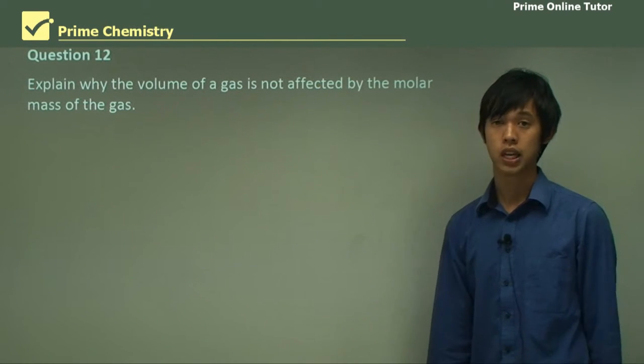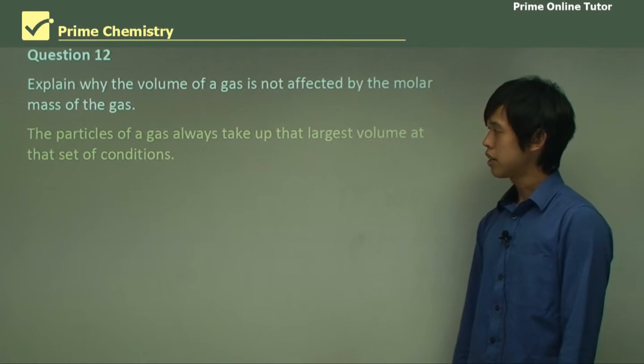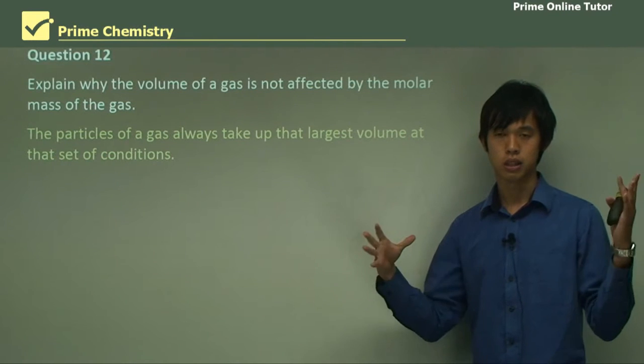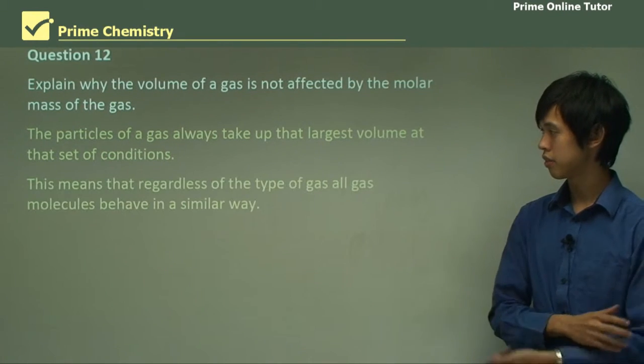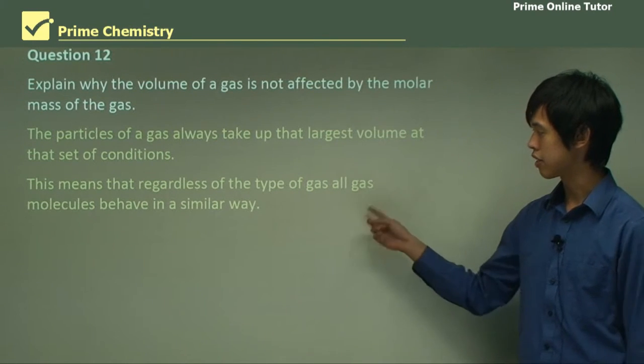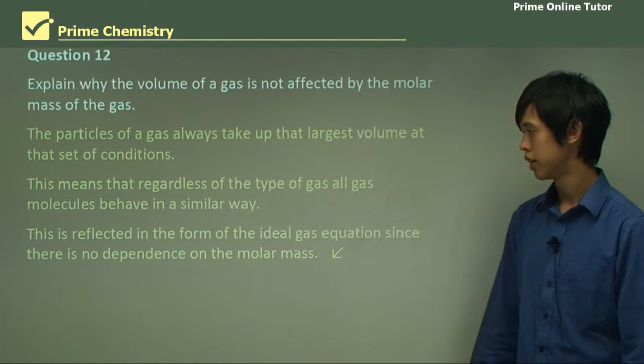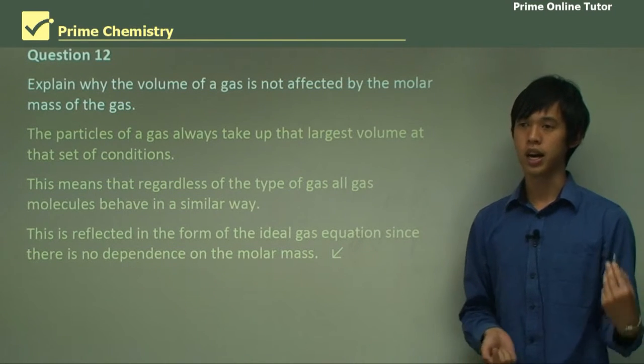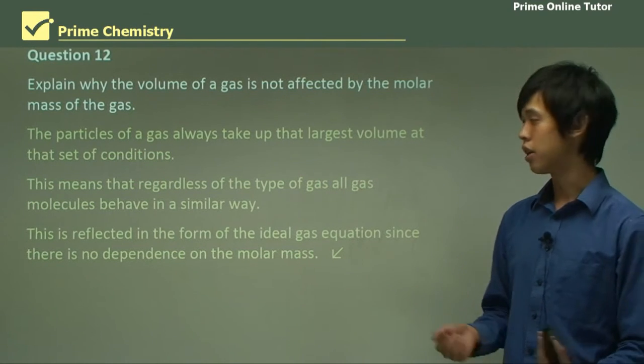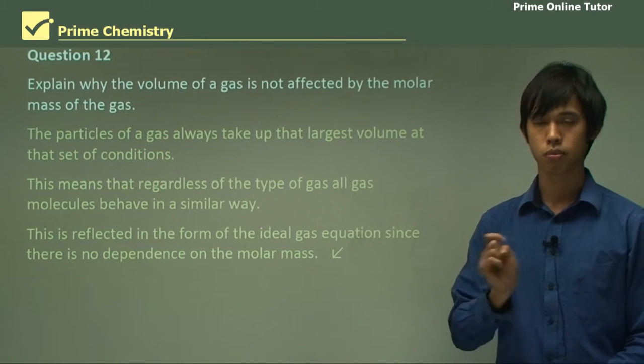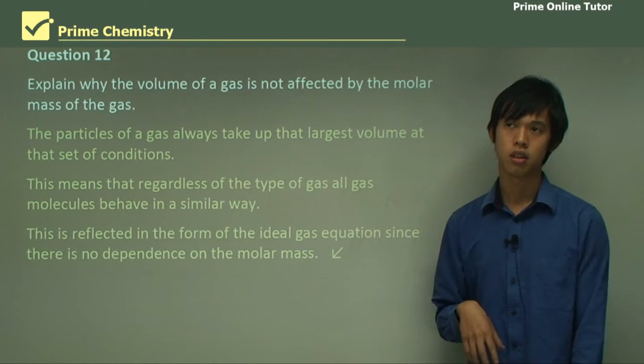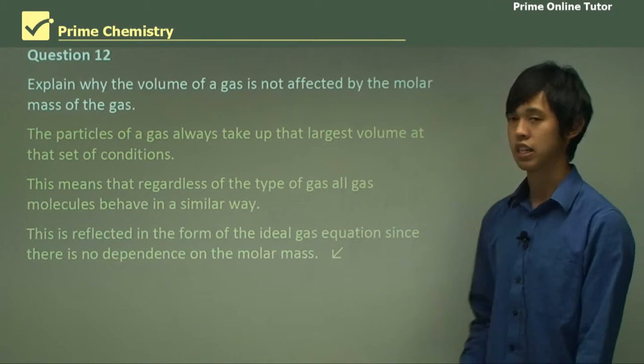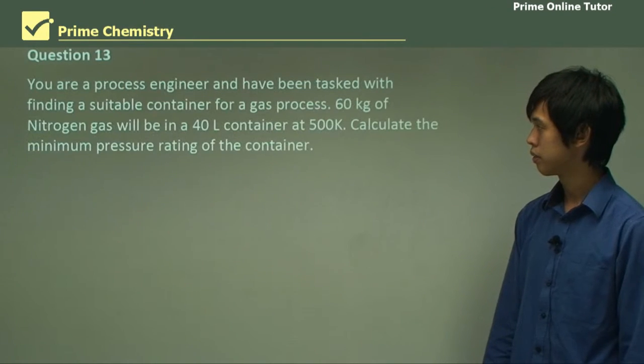Explain why the volume of a gas is not affected by the molar mass of the gas. Well, the particle of a gas always takes up the largest volume at that set of conditions. So whatever the gas is, it will always try to take up the largest volume, because that's what a gas does. That's how we define a gas. So this means that, regardless of the type of gas, all gas molecules behave in a similar way. And this is reflected in the form of the ideal gas equation, since there's no dependence on the molar mass. The molar mass only appears in that equation because the number of moles is related to the molar mass. So indirectly, yes, it is related to the molar mass, but it's not affected very much by it.